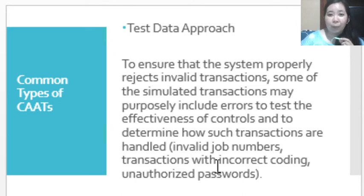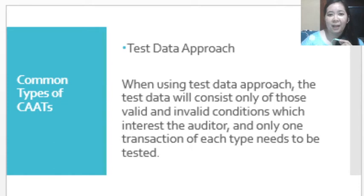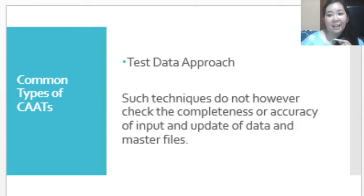For example, the auditor can include invalid job numbers, transactions with incorrect coding, or unauthorized passwords to test the effectiveness of the entity's internal control over their program. Some of the simulated transactions may purposely include errors. When using the test data approach, the transactions will consist only of valid and invalid conditions which interest the auditor, and only one transaction for each type needs to be tested. However, this technique does not check the completeness or accuracy of input and update of data or master files.